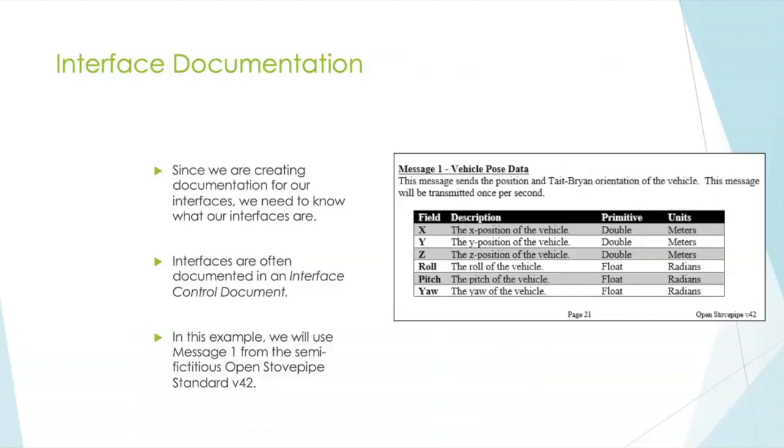Let's start talking about building a little bit of documentation. Typically, when I have to document an interface or start building my data model, I'm given an ICD, or an interface control document. It has all of these tables in here that look a lot like we see in message one. In this case, we have this thing called vehicle pose data. The point of what we're doing in our data model is we're trying to document the interfaces, and this is an interface expressed right here. For the sake of this paper and presentation, we're going to use the semi-fictitious open stove pipe standard version 42.